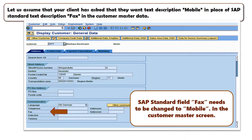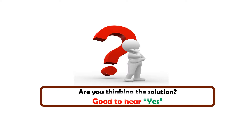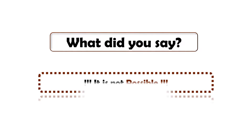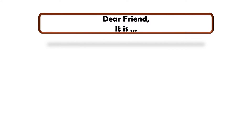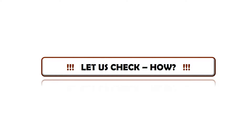In the custom master data there is a field 'fax,' and the client's requirement is they want to see the field text description as 'mobile' in place of 'fax.' You might be thinking this is not possible — but let me tell you it is very much possible. Let us check how to achieve this: how to change the SAP standard field text description with a client-specific field description.